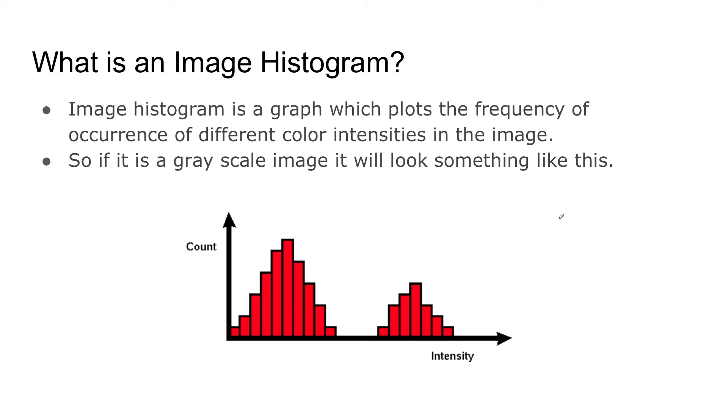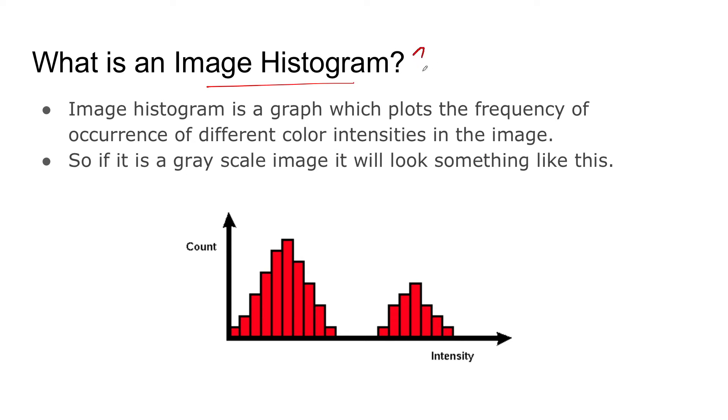So what exactly is image histogram? Image histogram is basically a graph which plots the frequency of occurrence of different color intensities in an image. That is, it's a graphical representation of the intensity distribution of an image. In simple terms, it represents the number of pixels for each intensity value that is present in the image.